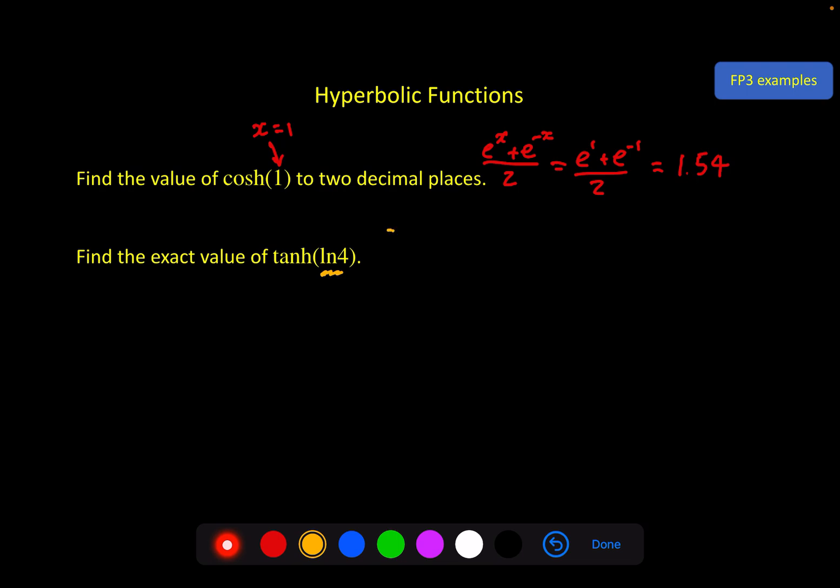So if we start with our definition again we've got e to the 2x minus 1 divided by e to the 2x plus 1. Put the log of 4 in there, 2 log 4 minus 1, e to the 2 log 4 plus 1. And then if you remember your log rules, this 2 in front can come up inside the log and become a squared.